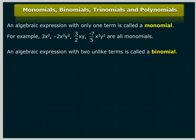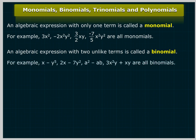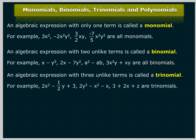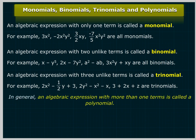An algebraic expression with two unlike terms is called a binomial. An algebraic expression with three unlike terms is called a trinomial. For example, 2y² - x² - x and 3 + 2x + z are trinomials. In general, an algebraic expression with more than one term is called a polynomial.